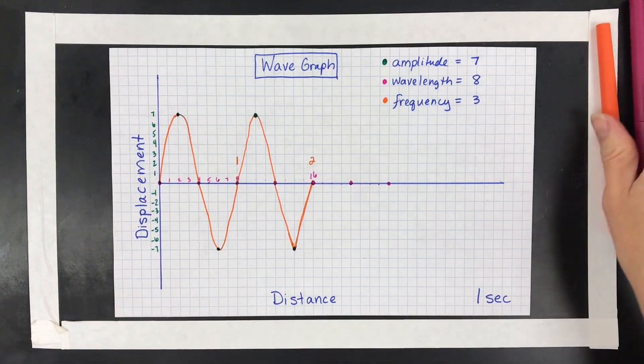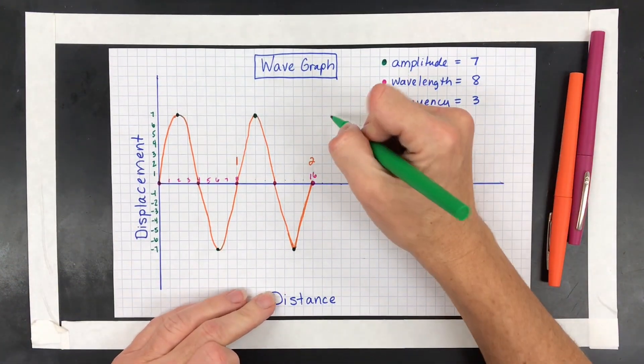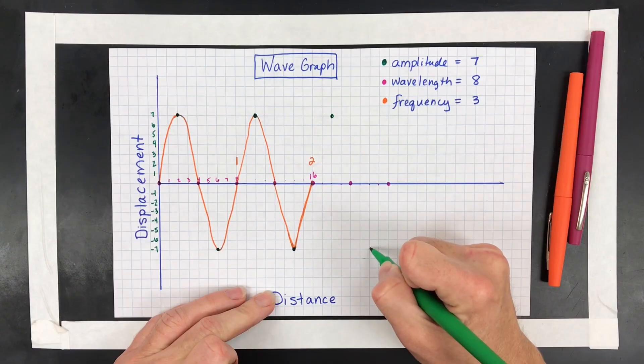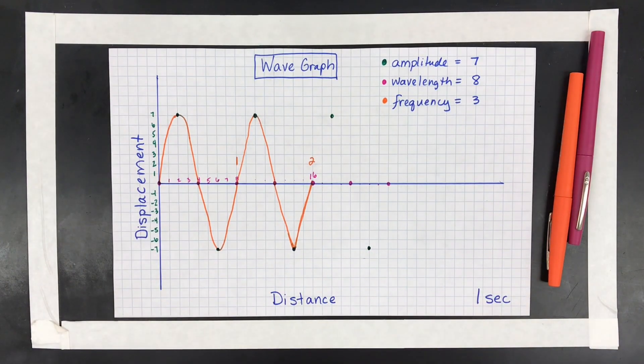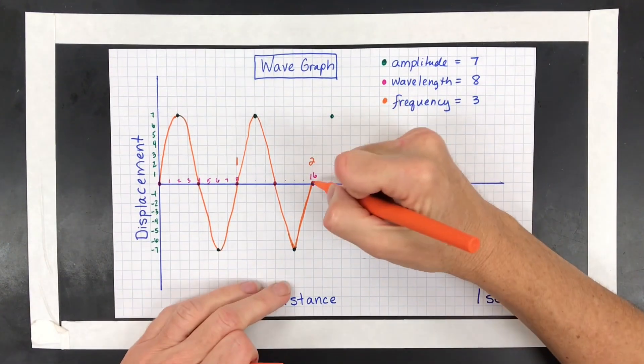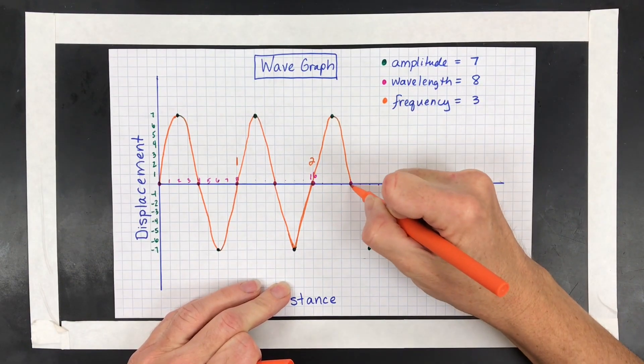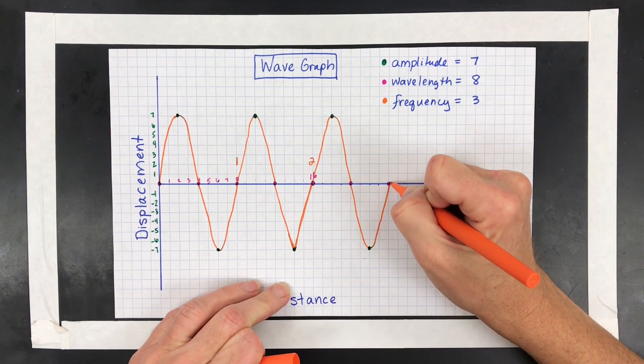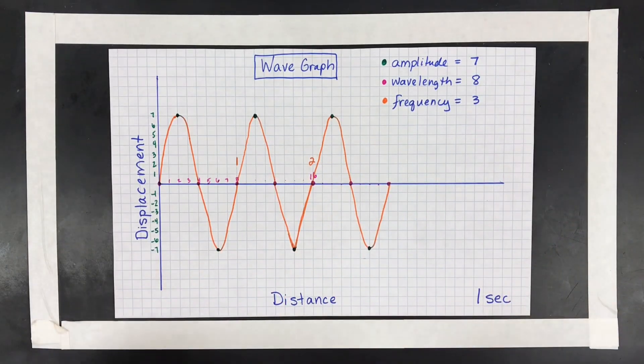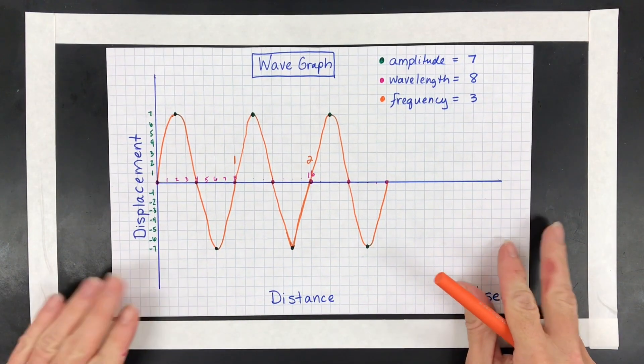And then mark your halfway points. Those, again, are where your resting points will be for your wavelength. You're going to have a crest and a trough at those points. And then draw again on your nice, smooth, hopefully smooth wave. Trying to make it a little bit more smoother than the last time. There we go. So there's a little mistake there, but that's still fine. Now, how does this relate to chemistry?